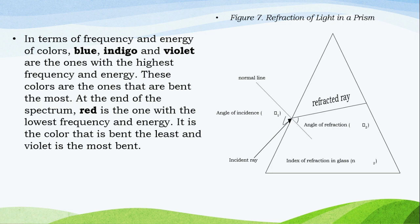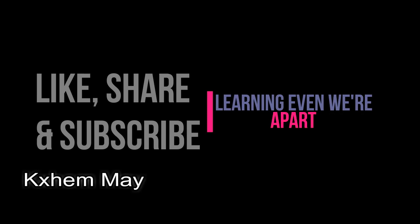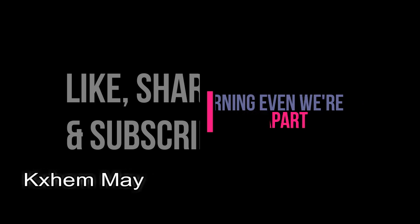In terms of frequency and energy of colors, blue, indigo, and violet are the ones with the highest frequency and energy. These colors are the ones that are bent the most. At the end of the spectrum, red is the one with the lowest frequency and energy. It is the color that is bent the least, and violet is the most bent. Sa frequency at enerhiya ng mga kulay, asul, indigo at lila ay may pinakamataas na frequency at energy. Ang mga kulay na ito ay higit na baluktot. Sa pagtatapos ng spectrum, pula ang may pinakamababang frequency at energy. Ito ang kulay na pinaka-kaunting baluktot at ang lila ay ang pinakabaluktot.